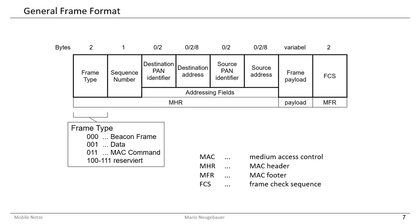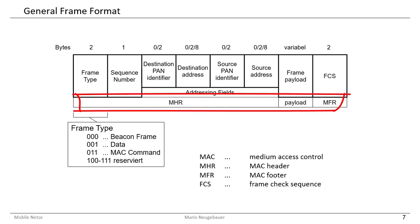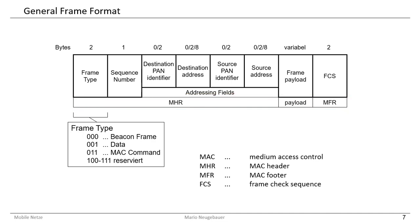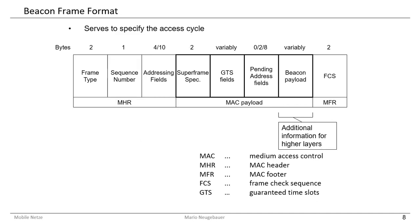The frame check sequence is computed with a certain algorithm, like in other standards. The main structure of this frame consists of a header, a payload, and a footer. The frame type, sequence number, and addressing fields are contained in the MAC header — the MHR part. This is followed by the payload, which contains information for the upper layers, and it is concluded by the MAC footer, the MFR part.